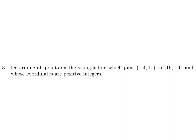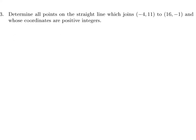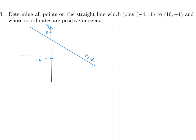Determine all points on the straight line joining (-4, 11) to (16, -1) whose coordinates are positive integers. First, let's draw a diagram. It doesn't have to be super accurate — we just want some understanding of the question. Negative 4, 11 is about here on the y-axis side, and 16, negative 1 is way out here. Connecting those points gives us the line.